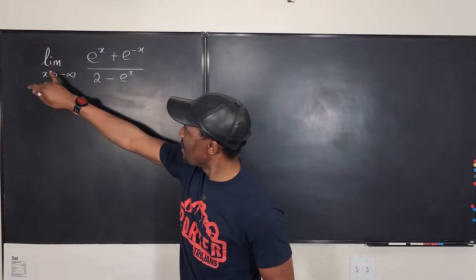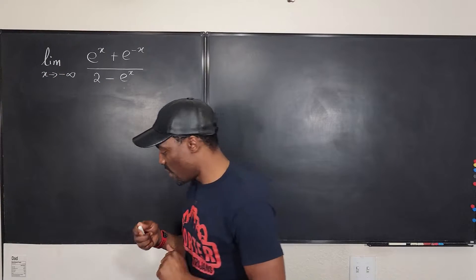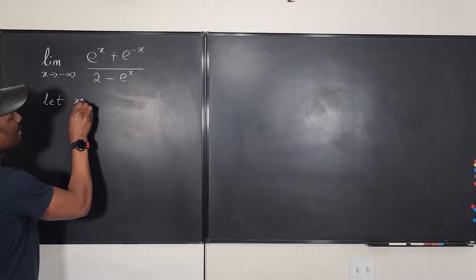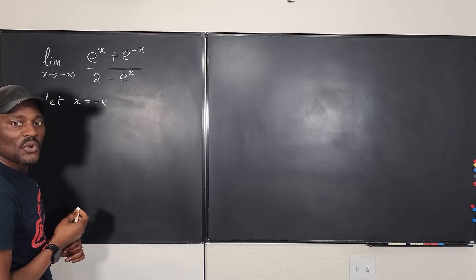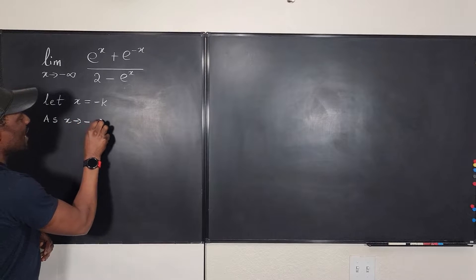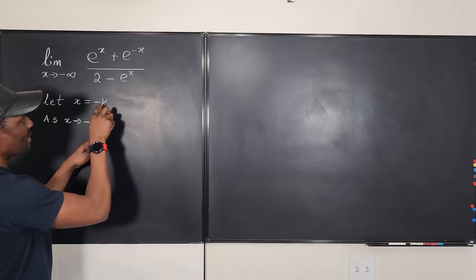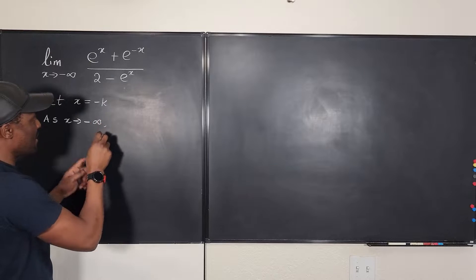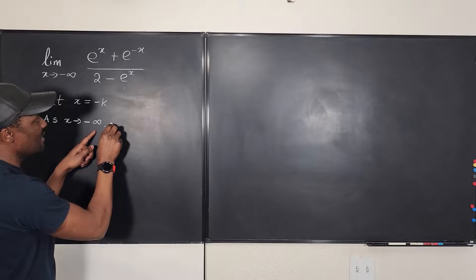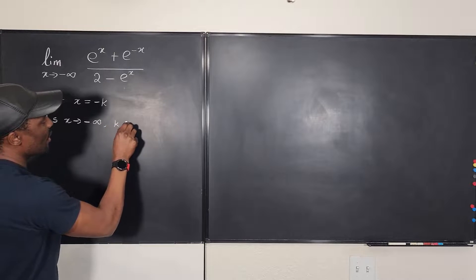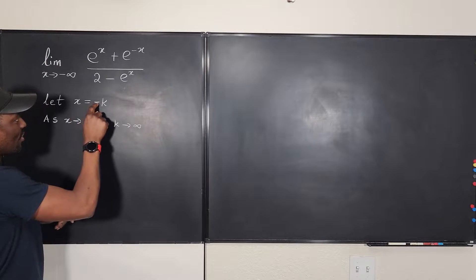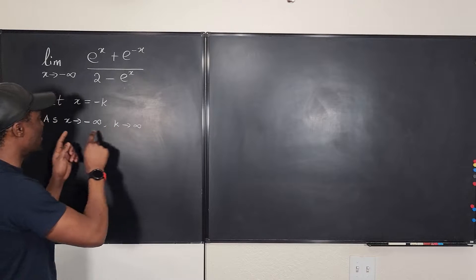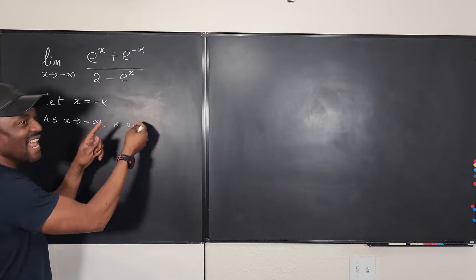So what I'm going to do is, instead of x going to negative infinity, we're going to say let x be equal to negative k. As x goes to negative infinity, you notice that k — because if x is negative k, as x goes to negative infinity we're going to have k go to infinity. Because k can be negative x: as x goes to negative infinity it's going to be negative negative infinity, and this becomes positive because this is the negative of that one.